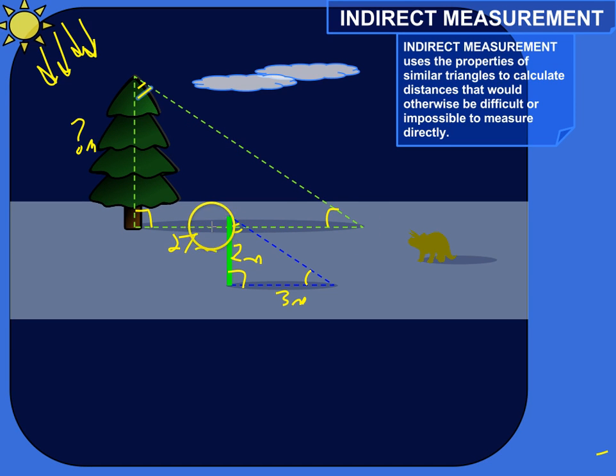So this side of the big triangle, it corresponds to this side of the small triangle. So the ratio that these form, 27 to 3, has to, by definition, because they're similar triangles, has to be equivalent to the ratio that this side of the triangle forms with this side of the green pole, because these are corresponding sides.